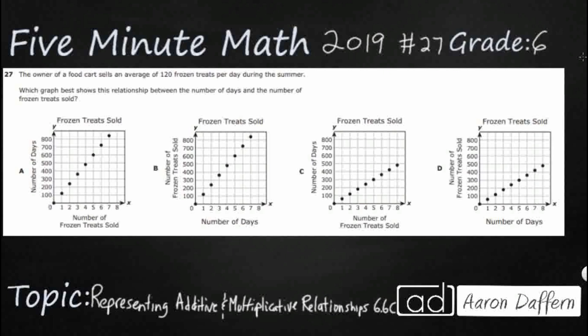If you have not done so already, please go ahead and take a moment to pause the video, work this problem out on your own, unpause it, and then we will look at our answers together. So we have a food cart that sells 120 frozen treats per day, and this per lets us know it's a rate because it is giving us a relationship of every day, it's 120, which means if we're dealing with a relationship of a rate, it also means it's multiplicative for multiplication.